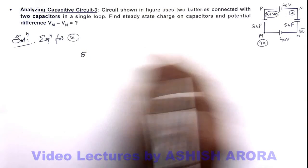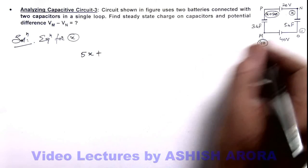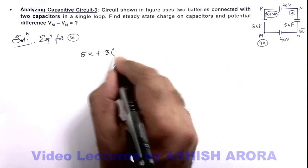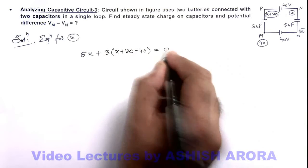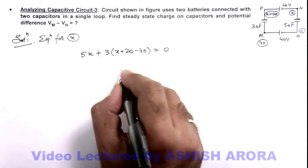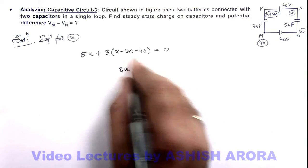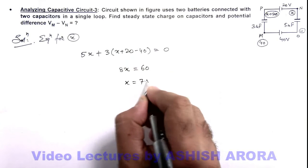So charge on this will be 5x, plus charge on this plate will be 3 multiplied by (x plus 20) minus 40, which should be equal to zero. On simplifying, this will give us 5x plus 3x, 8x, is equal to 60. So the value of x will be 7.5 volt.